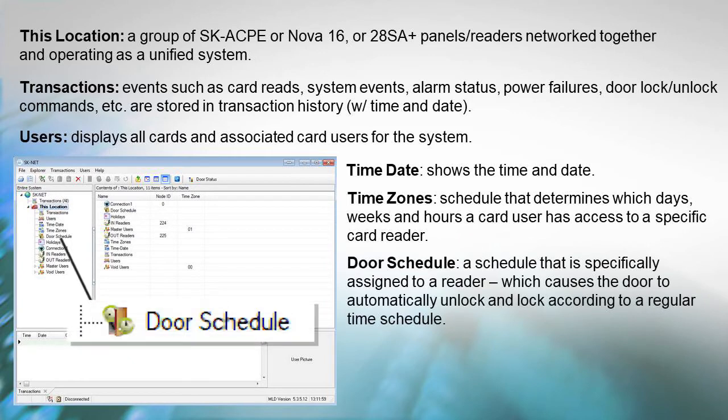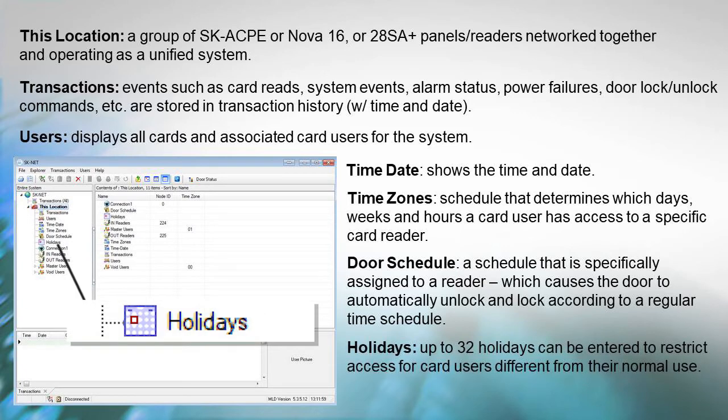Door Schedule: Is a schedule that is specifically assigned to a reader which causes the door to automatically unlock and lock back down according to a regular weekly time schedule. Holidays: The system operator can enter up to 32 holidays that will be used to restrict access for card users different from their normal use for defined holidays.